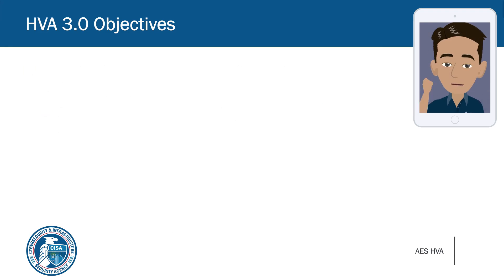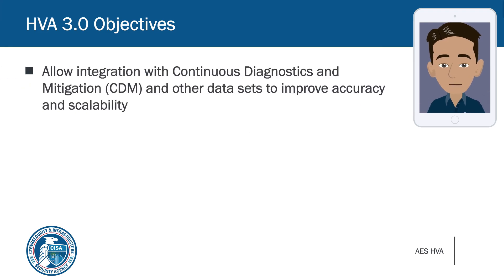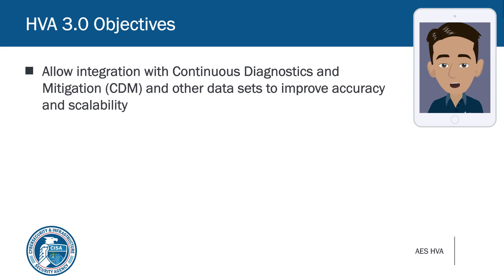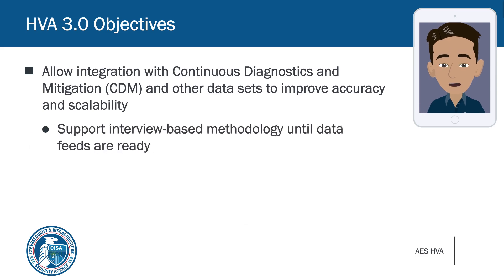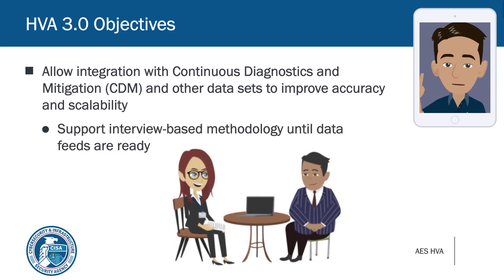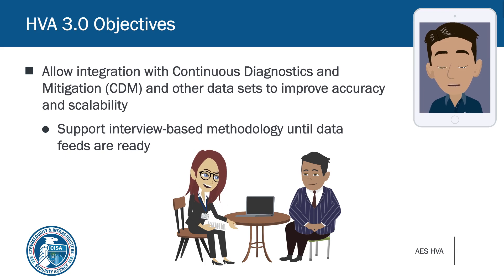Next, CISA's vision for the future of HVA includes eventual integration with the Continuous Diagnostics and Mitigation, or CDM, and other data sets in order to perform assessments at scale. HVA 3.0 was designed with this future in mind.